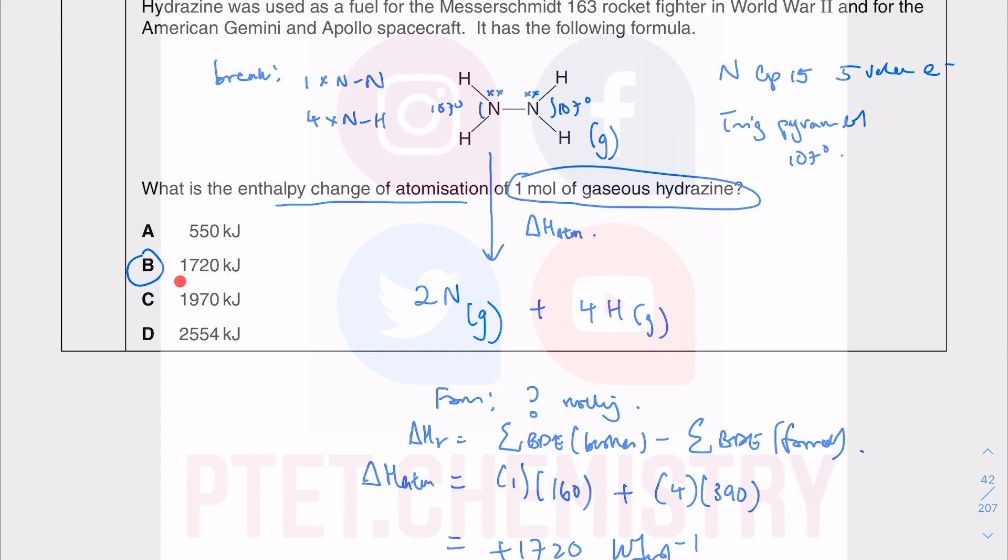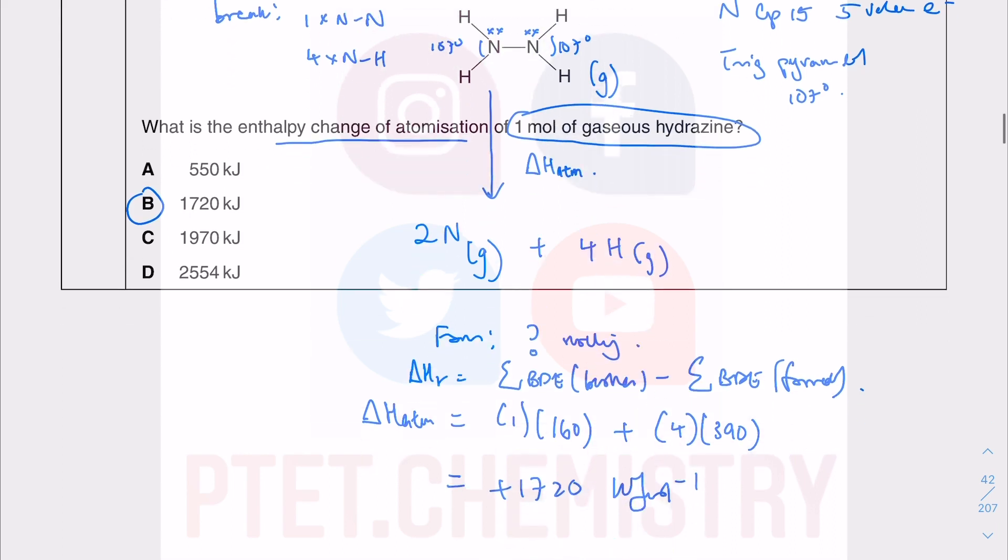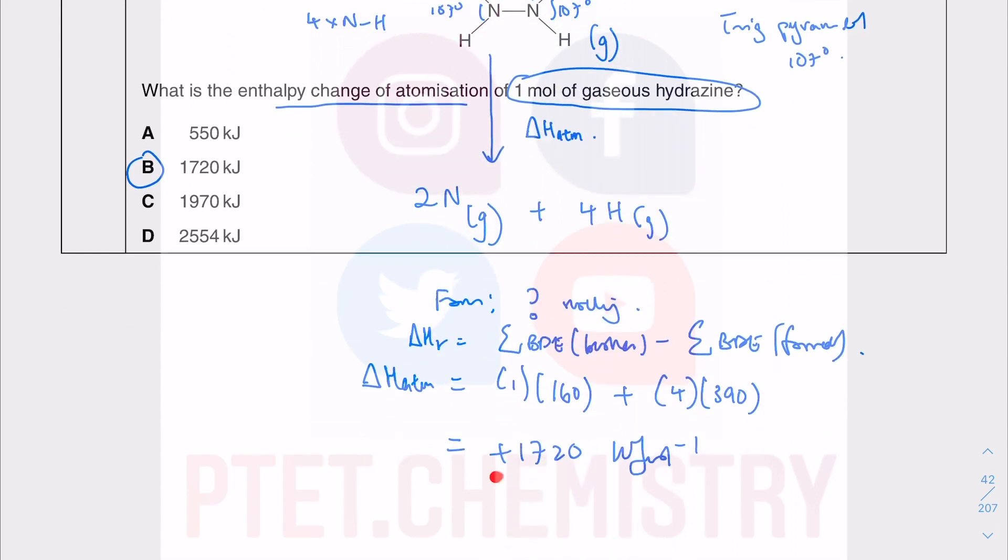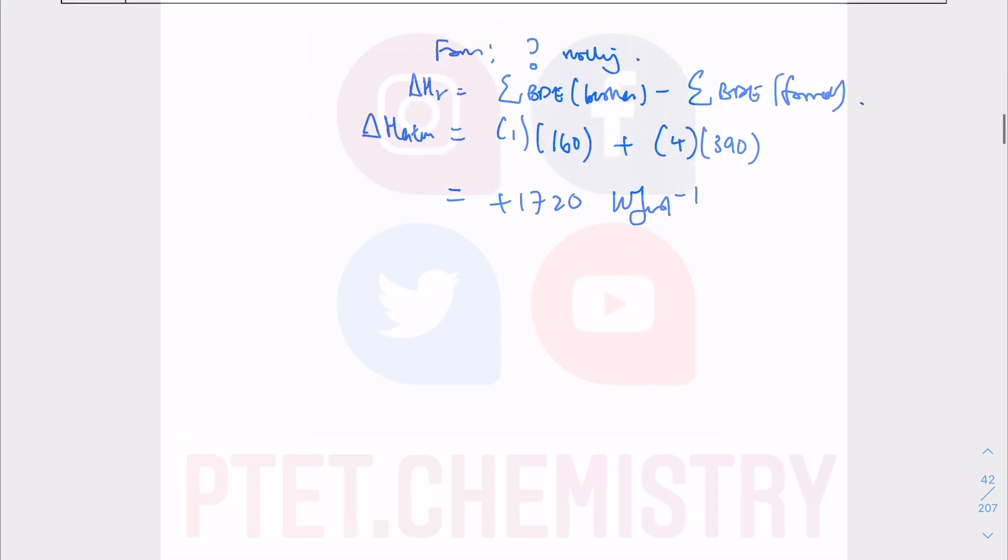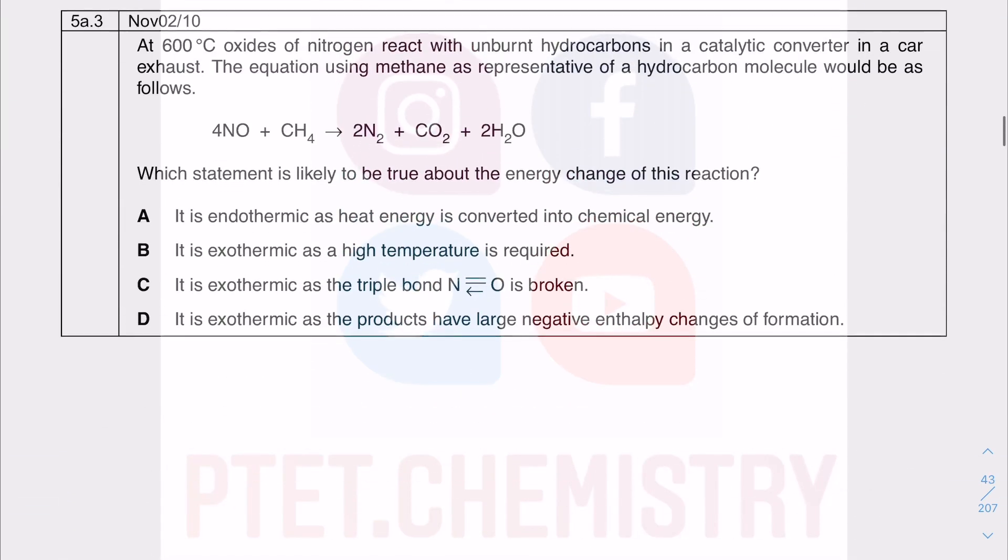It so happens that this is a MCQ paper, so you're a bit fortunate there. But if this is a theory paper, you've got to have a sign, a value and a unit, especially for calculations involving enthalpy changes.